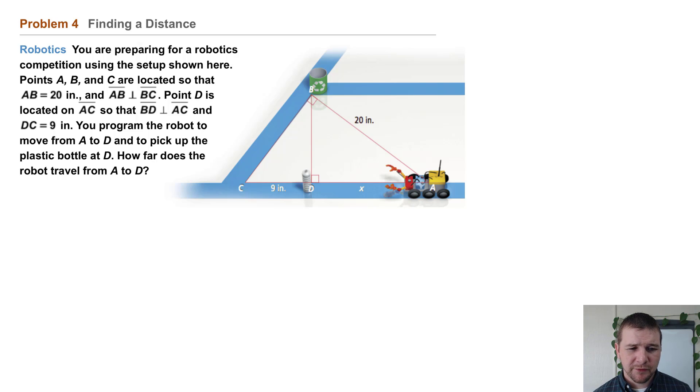You program the robot to move from point A to point D and to pick up the plastic bottle at point D. How far does the robot travel from A to D?